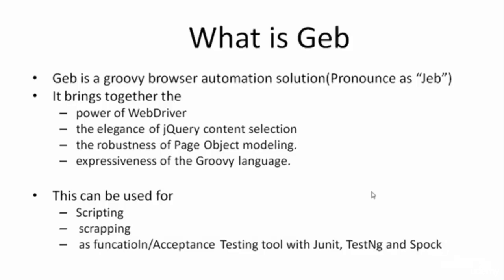This framework has also added the elegance of jQuery content selection, and for the same purpose the Navigator API has been included in JAP. This Navigator API has made selection of content on web pages quite easy.